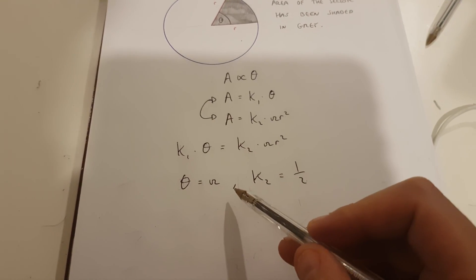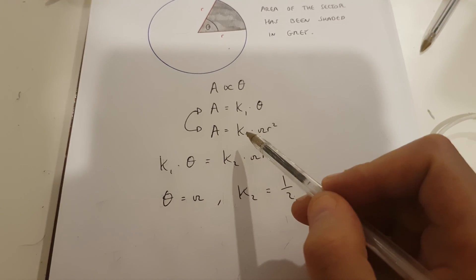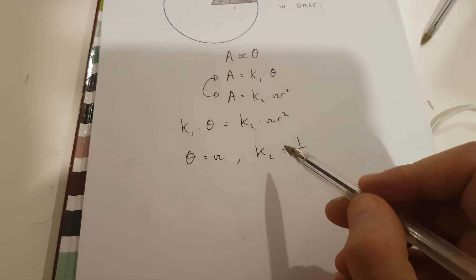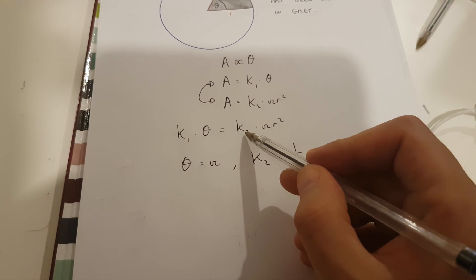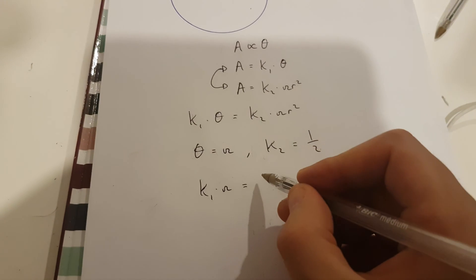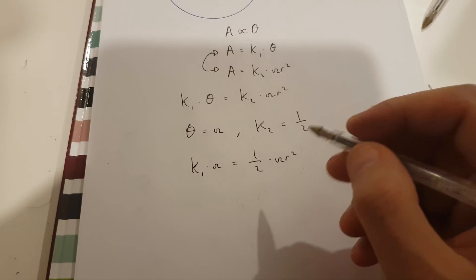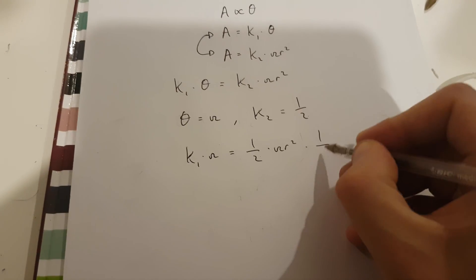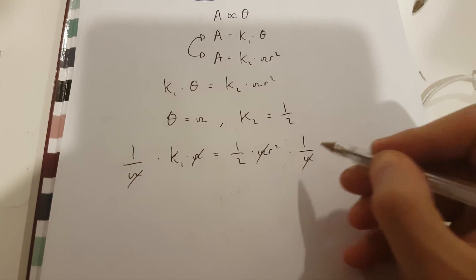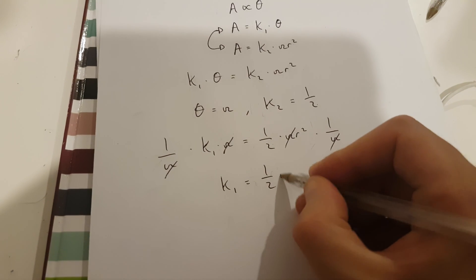So we know that when theta is equal to pi, k2 is going to be equal to half. The area of this sector would become half times pi r squared. Now if we plug pi into theta and half into k2, what we get is k1 multiplied by pi is going to be equal to half times pi r squared. Now watch what happens when I multiply both sides of this equation by 1 over pi: this pi cancels out this pi, and what we get is k1 is equal to half multiplied by r squared.